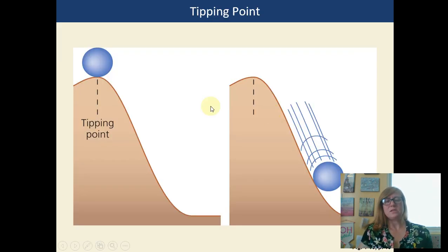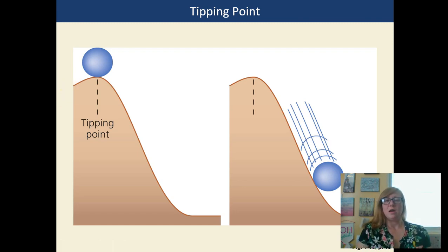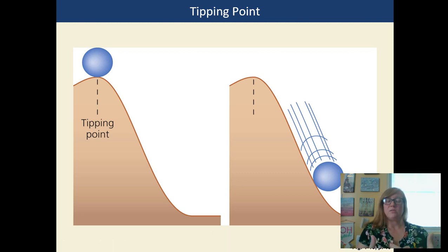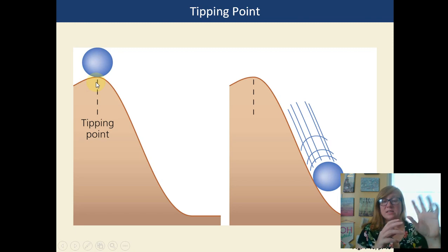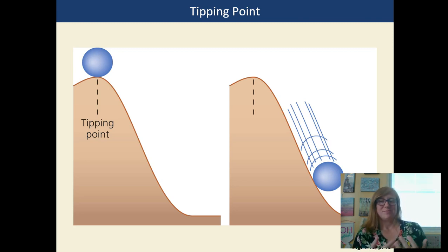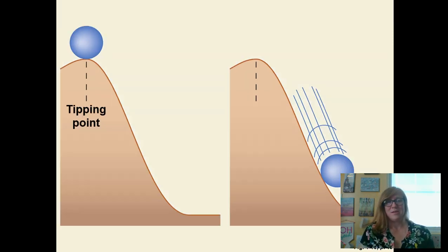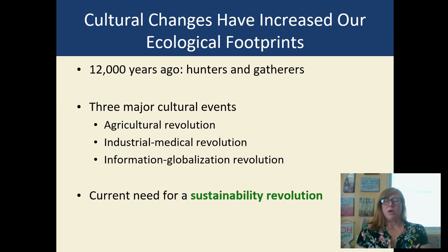This illustrates a tipping point — imagine we're pushing the environment further and further, and once we reach a certain point, there's no stopping the free fall in that environmental system. That's what scientists are really trying to warn people about with climate change. They're scared we're going to reach this tipping point and see a cascade of irreversible changes. That's why we need to care and act now.